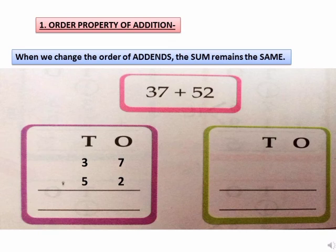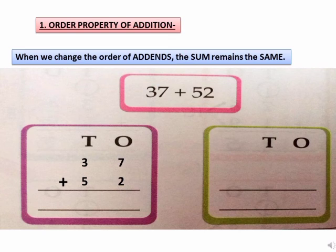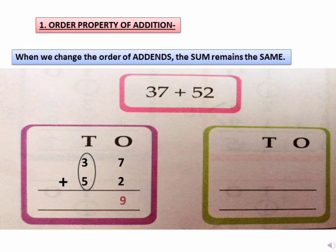Now, put the addition sign. First, add the digit at ones place. That is 7 plus 2, which is equal to 9. Write 9 in the ones column. Now, add the digit at tens place. That is 3 plus 5, which is equal to 8. Write 8 in the tens column. Thus, the sum of 37 and 52 is 89.